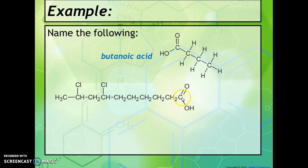Last but not least, we have to figure out which carbon they're coming off of. We'll start down here and go one, two, three, four, five, six, seven, eight, nine. So it's 7,9-dichlorodecanoic acid.